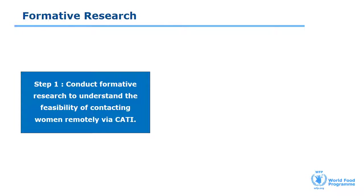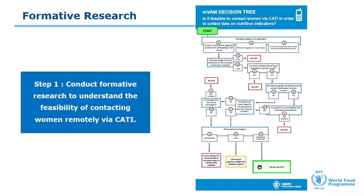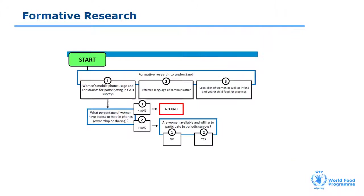Let's discuss in greater detail the first step: the formative study. The decision tree describes the steps that need to be followed to determine if the operating environment is suitable for using CATI to collect dietary data from women. Before starting remote phone surveys with women, it's important to conduct a formative study to understand women's mobile phone usage and any constraints they might have which don't allow them to participate in a CATI survey, what their preferred language of communication is, and what the local diet of the women and young children you are targeting is, and what the local infant and young child feeding practices are. The results from the qualitative study should confirm that women's phone access — which includes both ownership and access through sharing — is at least 50%. If this is not the case, CATI is not a feasible mode for contacting women in that area, and it might be necessary to conduct a mixed-mode survey.